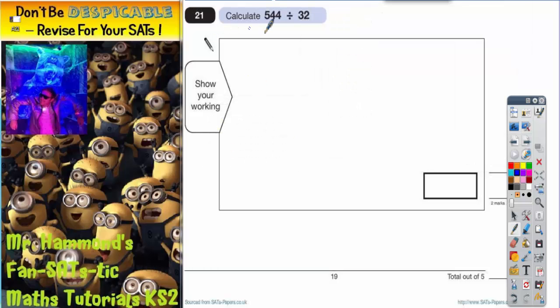Question 21: Calculate 544 divided by 32. As soon as you see divide and a two-digit number like this, we should be thinking about the chunking method. Chunking is basically like repeated subtraction.